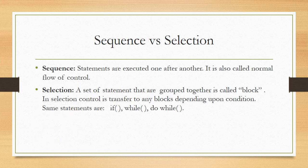Difference between sequence and selection: In sequence, statements are executed one after another — it is also called normal flow of control. Suppose a program consists of five lines, it starts executing from line one up to line five. In a selection control statement, the control is transferred to any block depending upon the condition. For example, if we use an if statement, it contains two blocks — if the condition is true, block one is executed; otherwise, the second block is executed.